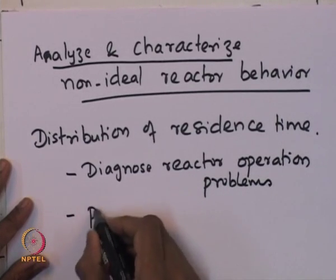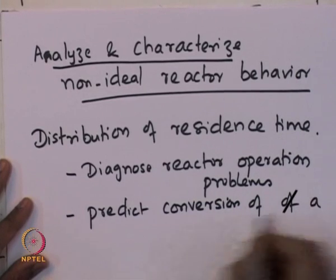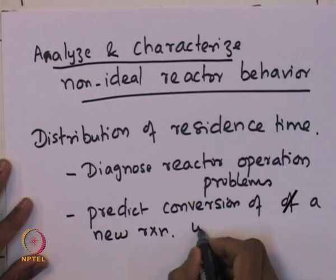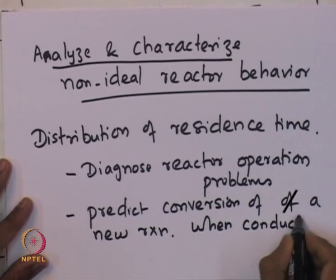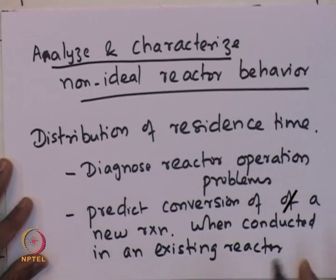RTD is also used to predict conversion of a new reaction when conducted in an existing reactor. Suppose a reactor has already been characterized — can we predict the behavior of a new reaction in that reactor? Additionally, if an experiment has been conducted at small scale and we want to scale it up to increase productivity, it is important to characterize non-ideal behavior, as it helps in scaling up the reactors.